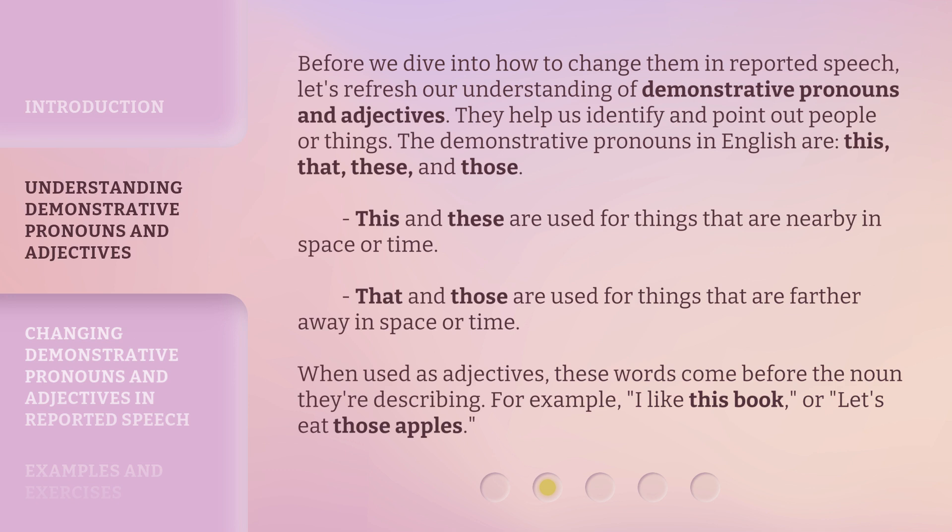This and these are used for things that are nearby in space or time. That and those are used for things that are farther away in space or time. When used as adjectives, these words come before the noun they're describing. For example: I like this book, or let's eat those apples.